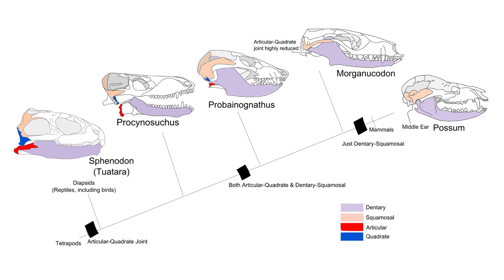In cynodonts, the jaw articulation is between the quadrate and articular bones. The quadrate bone will go on to evolve into the incus bone, while the articular bone will go on to evolve into the malleus bone.